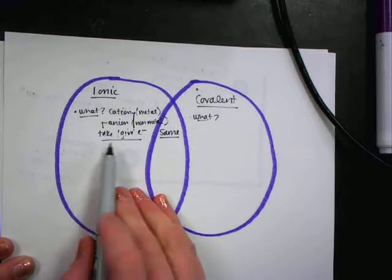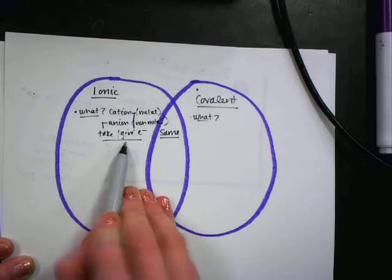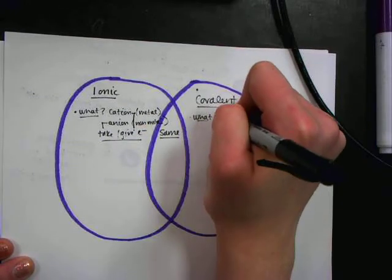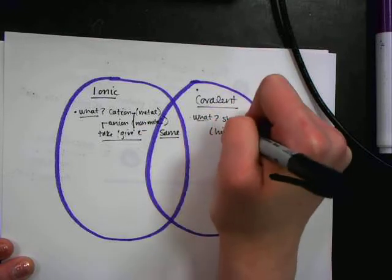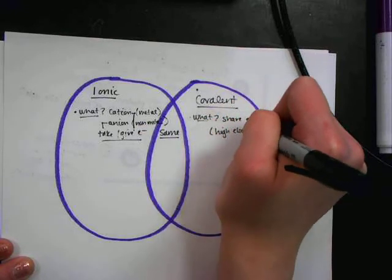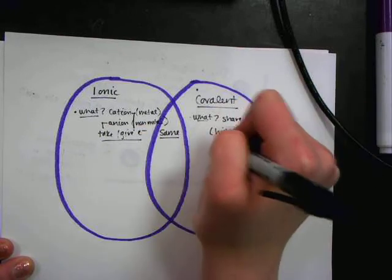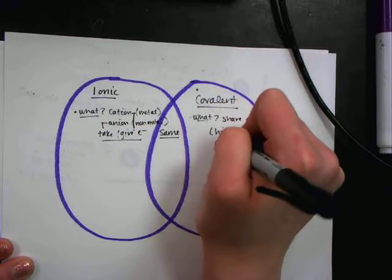So in ionic bonds, you're taking and giving electrons. Over here in covalent, they're going to share their electrons. And they share because they both have high electronegativities, which means that they don't want to give up electrons.